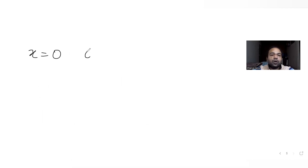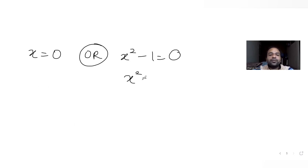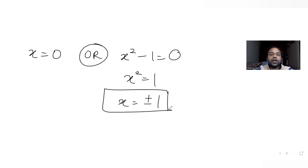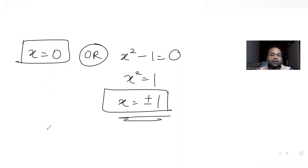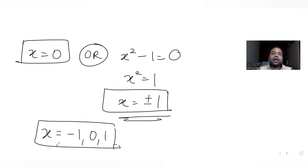Solving x(x²-1) = 0 gives either x = 0 or x²-1 = 0, which means x² = 1, so x = +1 or x = -1. Therefore we get three candidate values of x: -1, 0, and 1.